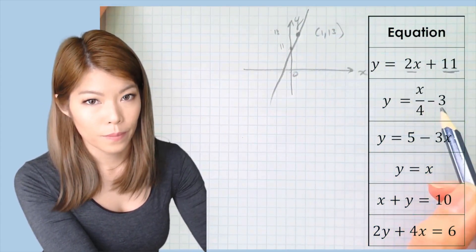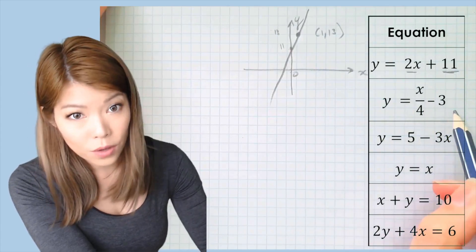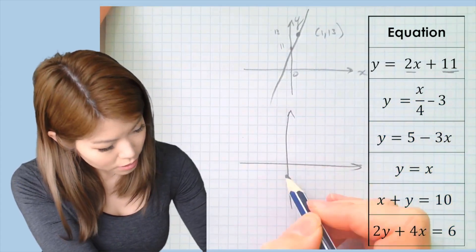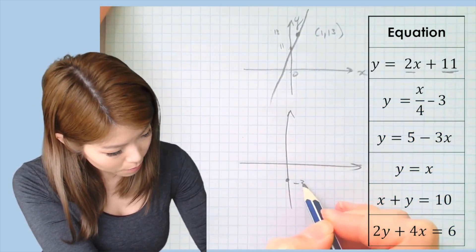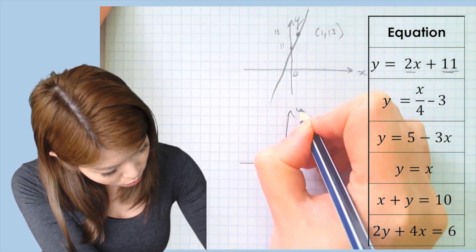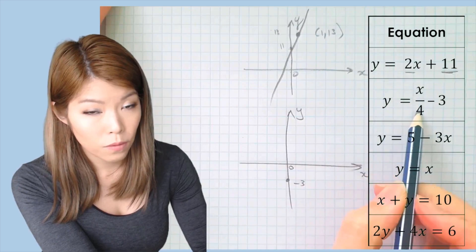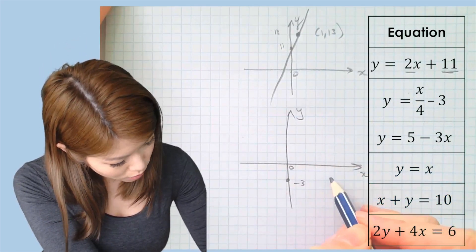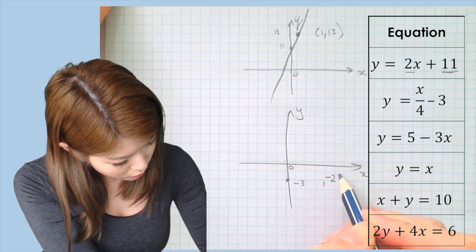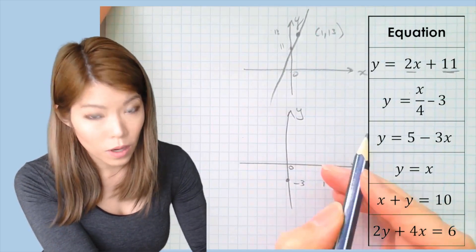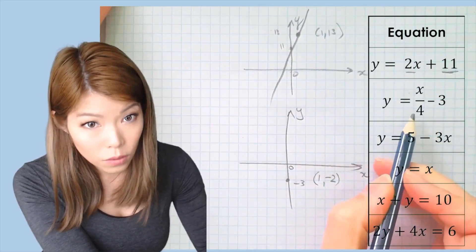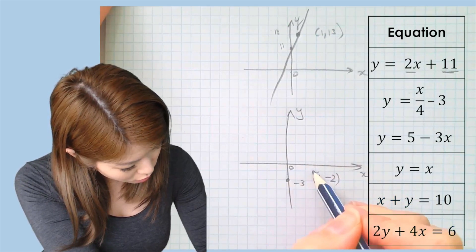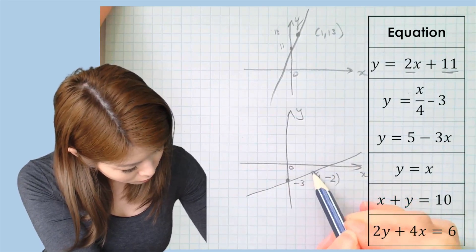For the second equation, y-intercept is minus 3 and gradient is a quarter. Starting at y-intercept (0, minus 3), go up 1 across 4 — that gives y value negative 2 and x value 4. So our second coordinate is (4, negative 2). Draw the line and then put the dot.